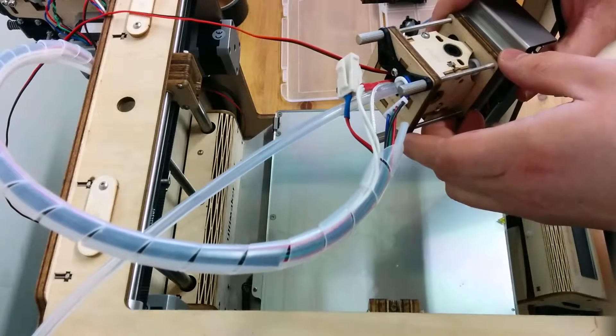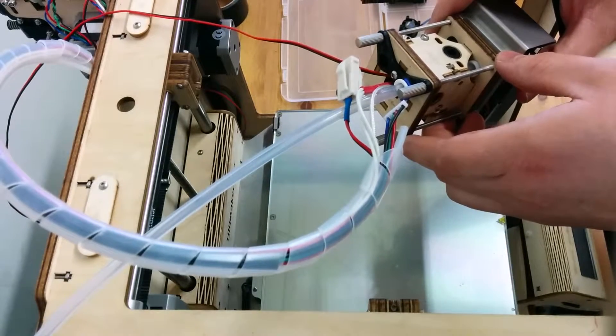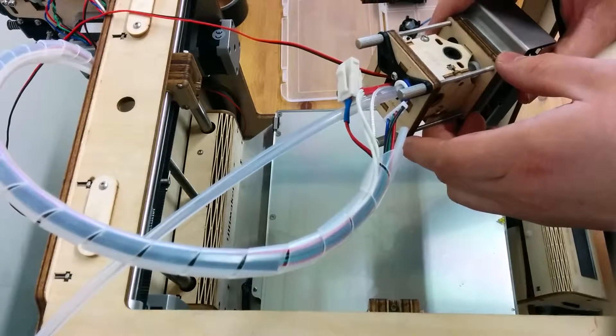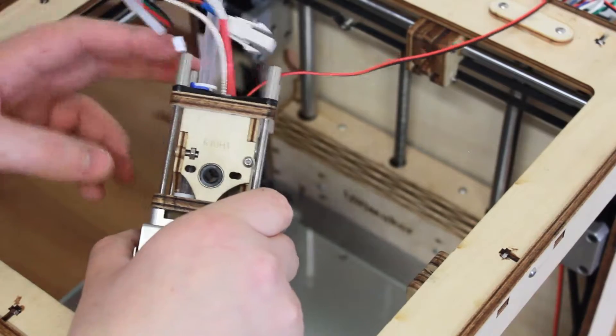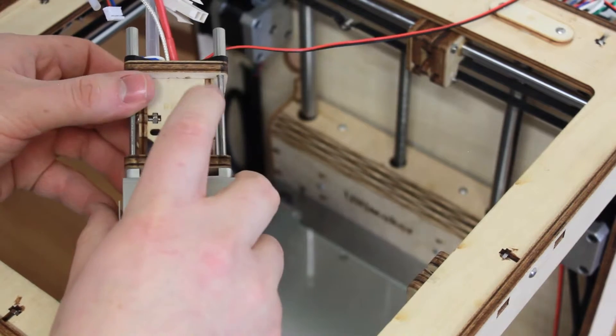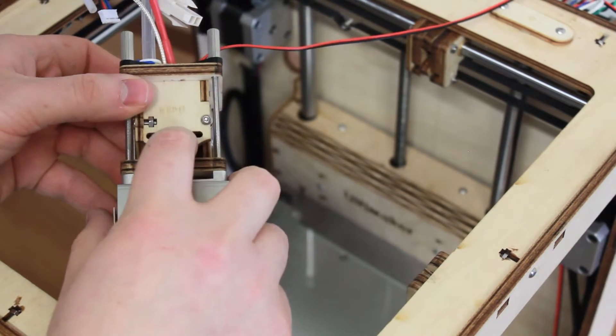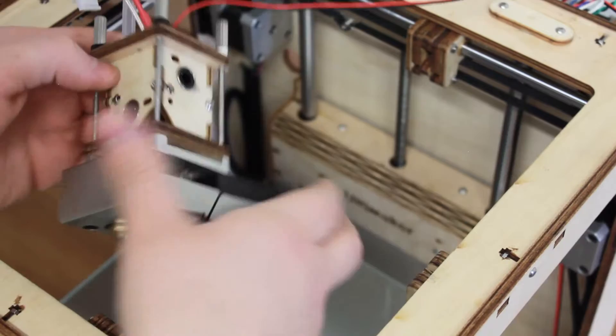Okay, now that you remove the Y and X rod from the carriage, you will have to remove the four thumb screws on the top to be able to remove the sensor and the bearing.